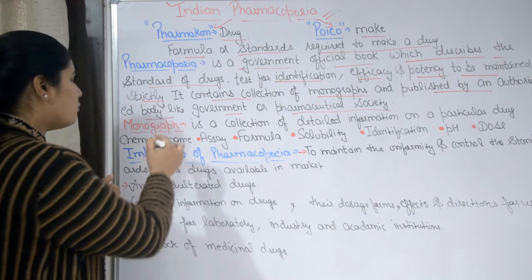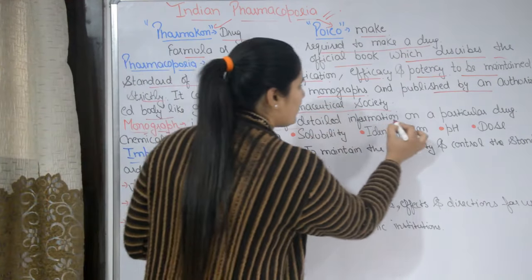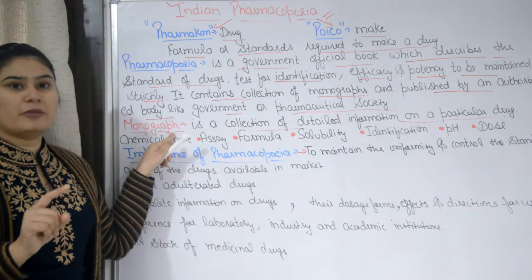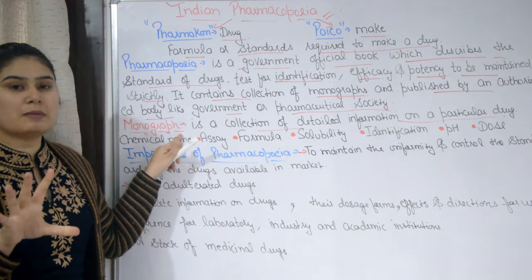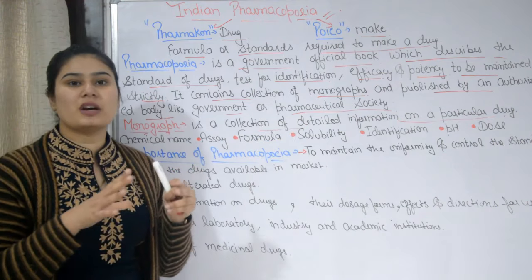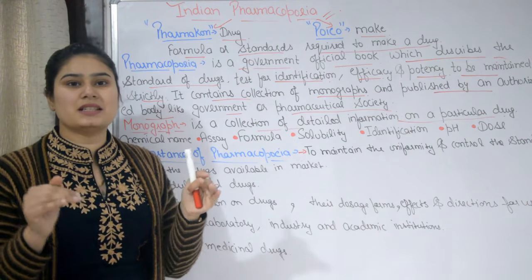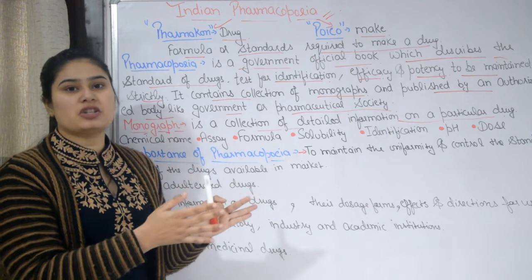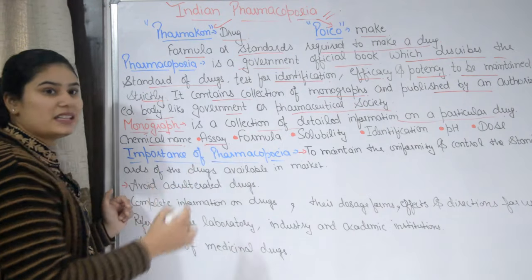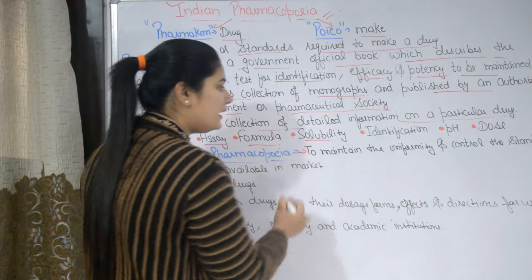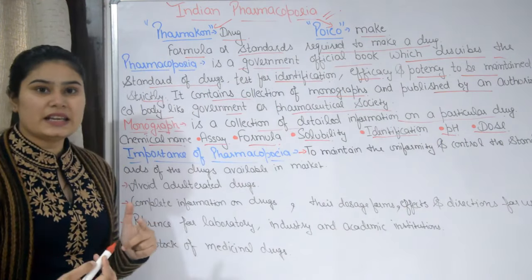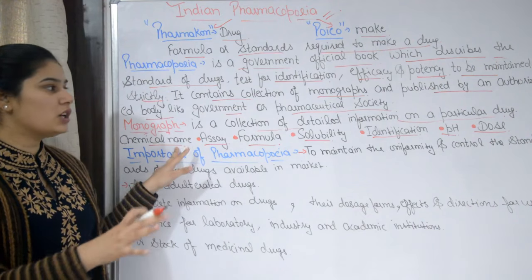What are monographs? Monographs are a collection of detailed information on a particular drug. For every drug in a country, all detailed information is available — like chemical name, assays, testing methods, formula, solubility, identification test, pH, dose, indications, side effects, and contraindications. Everything about a particular drug is available in pharmacopoeia.